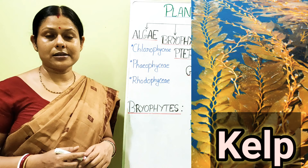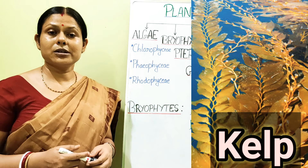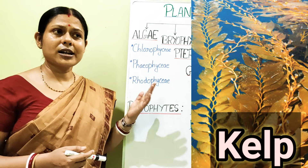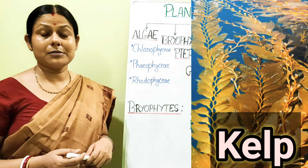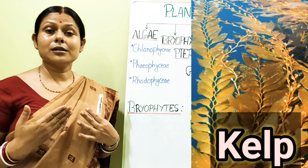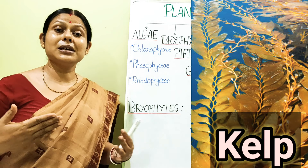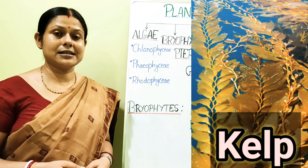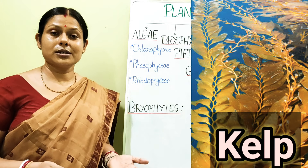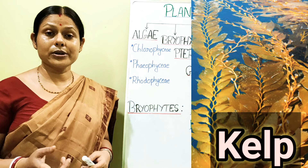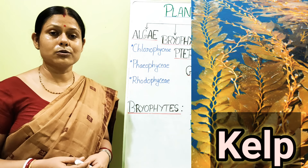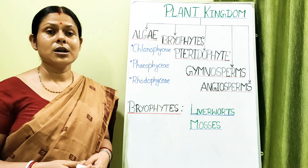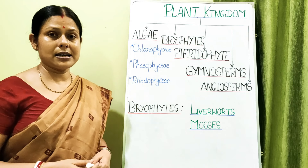The reserve food material in Phaeophyceae is mannitol and laminarin. The organism called kelp, found among Phaeophycean members, can grow up to 100 meters under the ocean. Kelp forms important food items — especially in Oriental countries — and is also used as fodder for domestic animals.